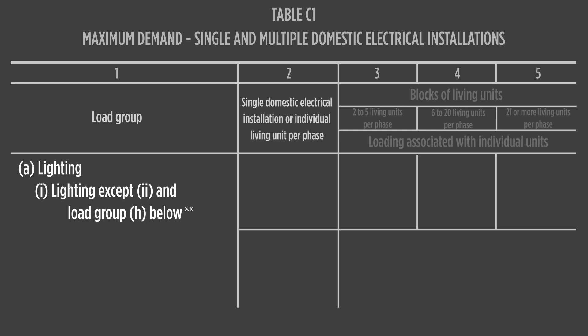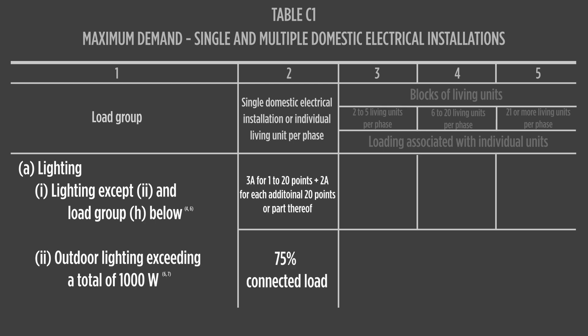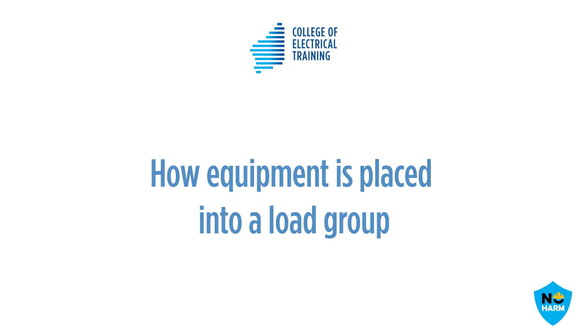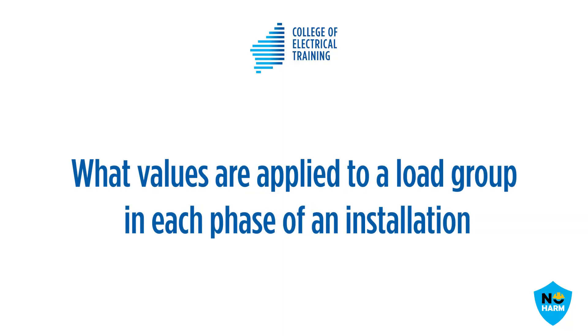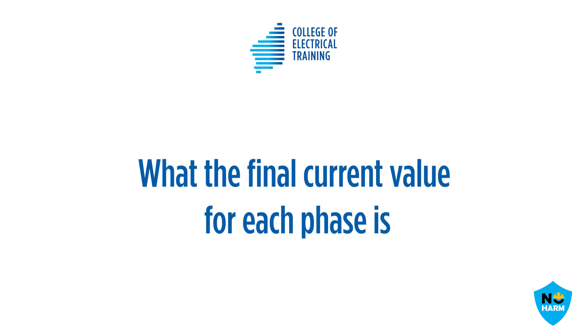Any load will contribute something to maximum demand calculation, so all loads must be allocated to a group. ASNZS 3000 has worked maximum demand examples in Appendix C for guidance in the calculation process. These examples show how equipment is placed into a load group, what values are applied to a load group in each phase of an installation, and what the final current value for each phase is.